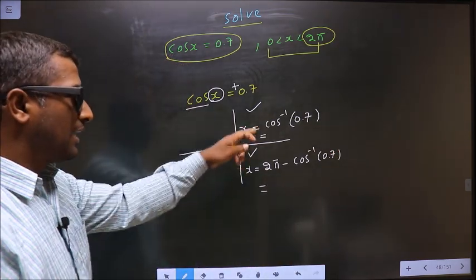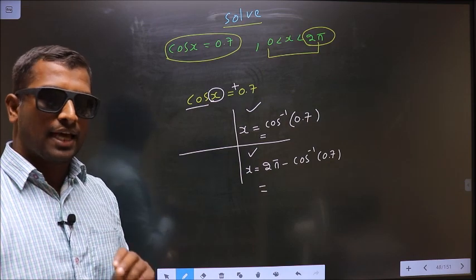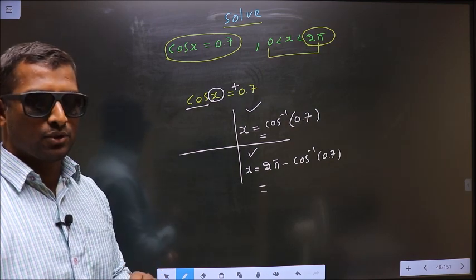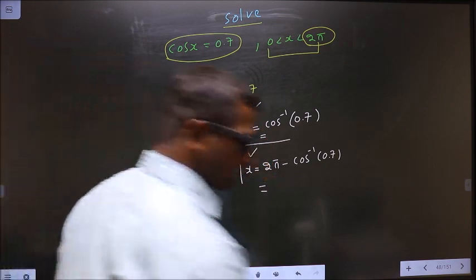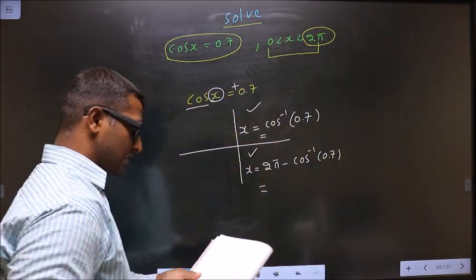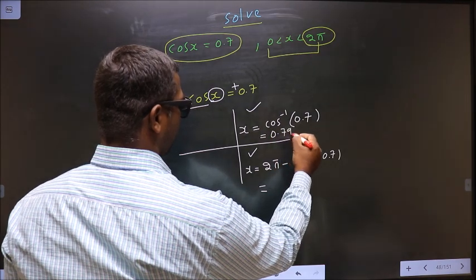Before calculating, make sure your calculator is in radians mode. Put this in the calculator and you should get 0.795.